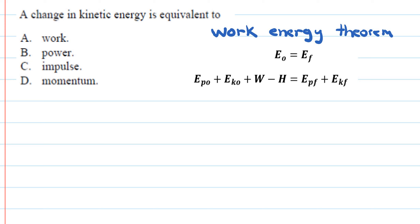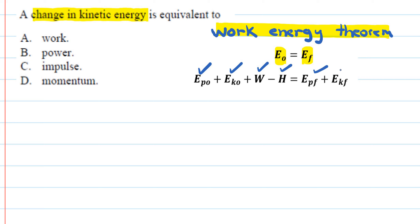Let's look at another theory-based question: a change in kinetic energy is equivalent to which of the four options? We'll work with the work-energy theorem, which states that energy is conserved — energy at the beginning equals energy at the end. The energies to consider include potential energy, kinetic energy, work, and friction at the beginning, and potential energy final and kinetic energy final at the end.